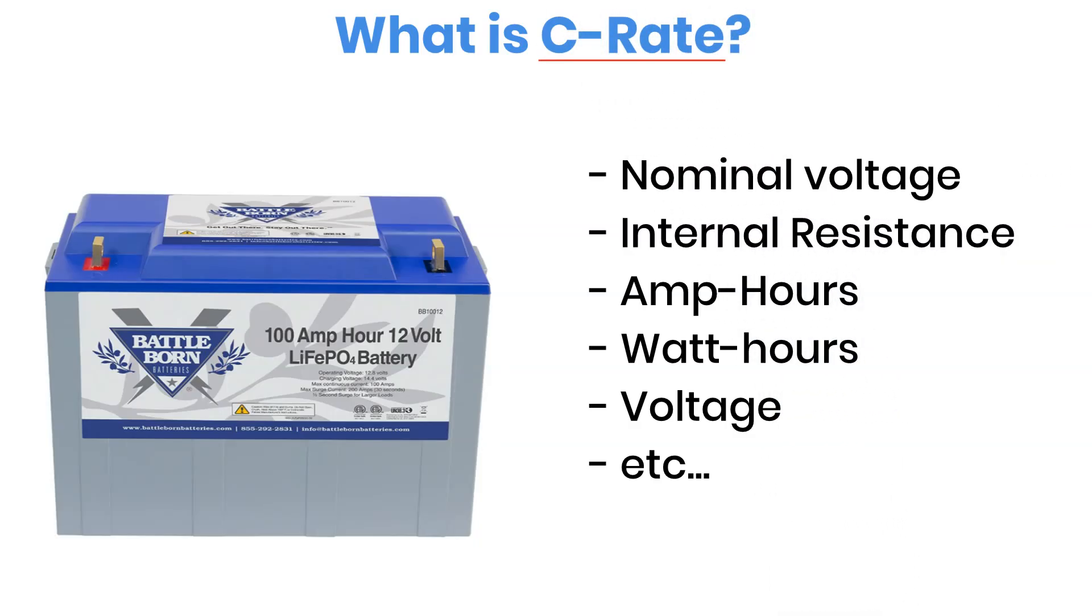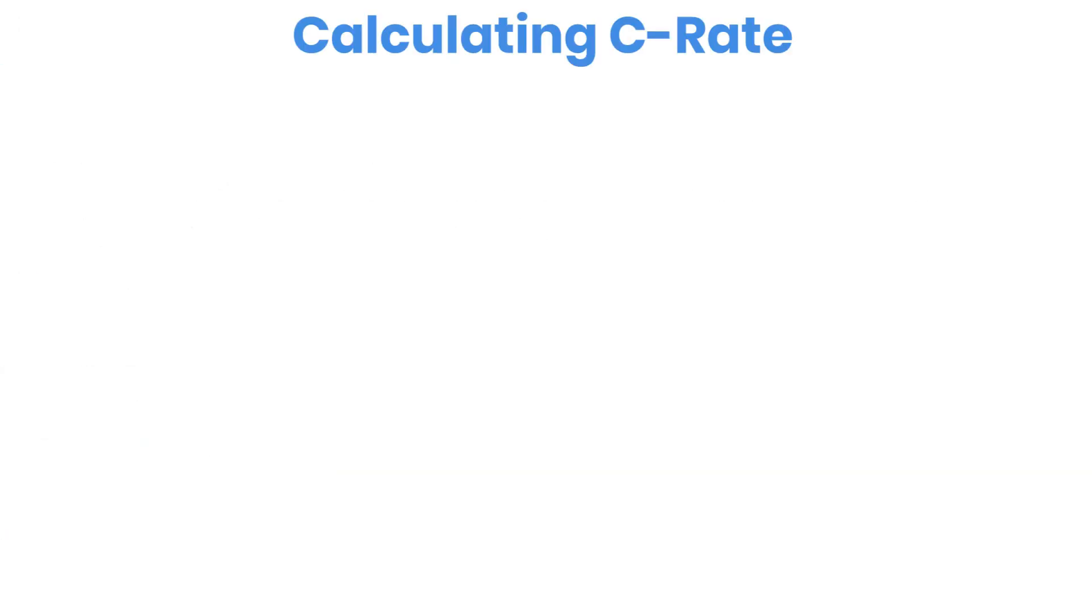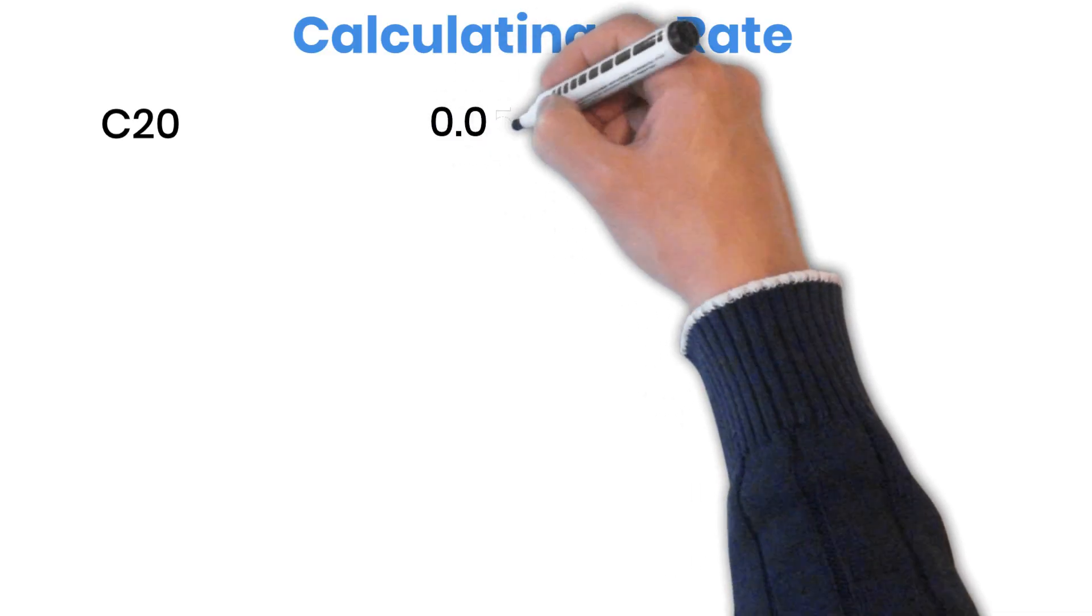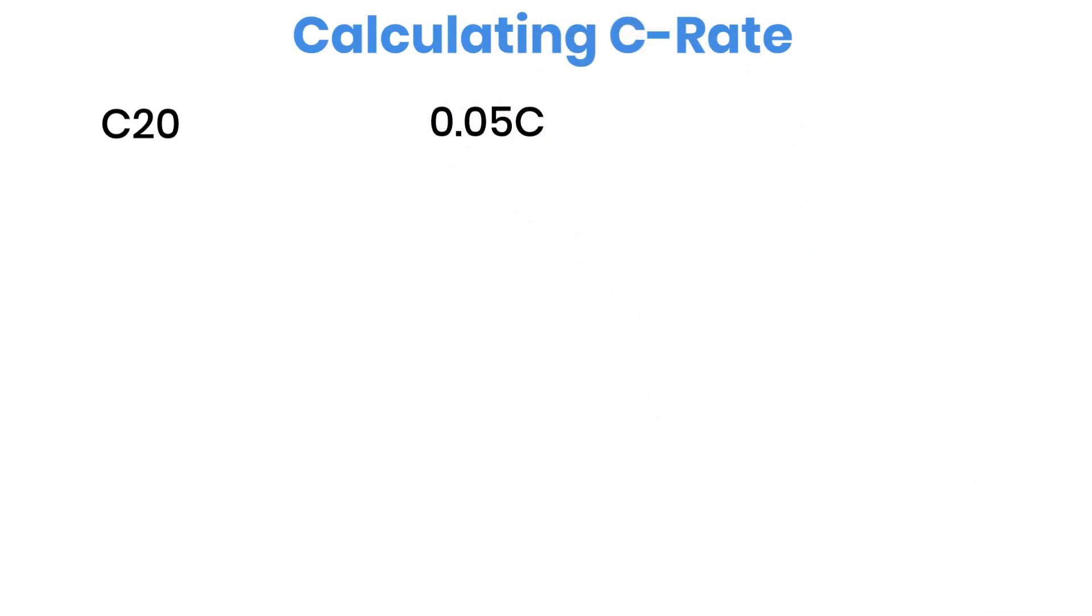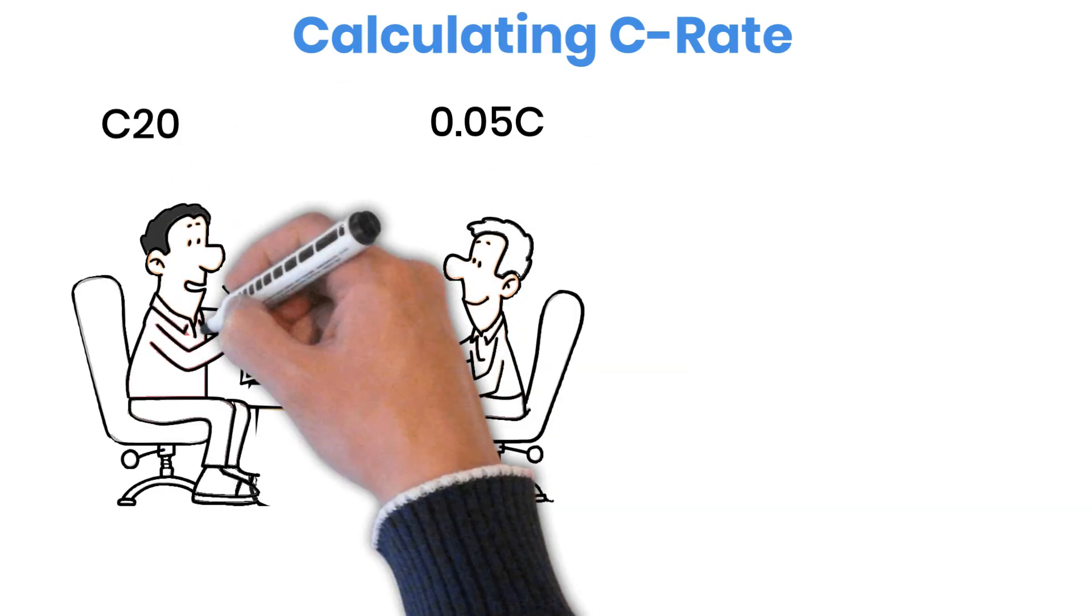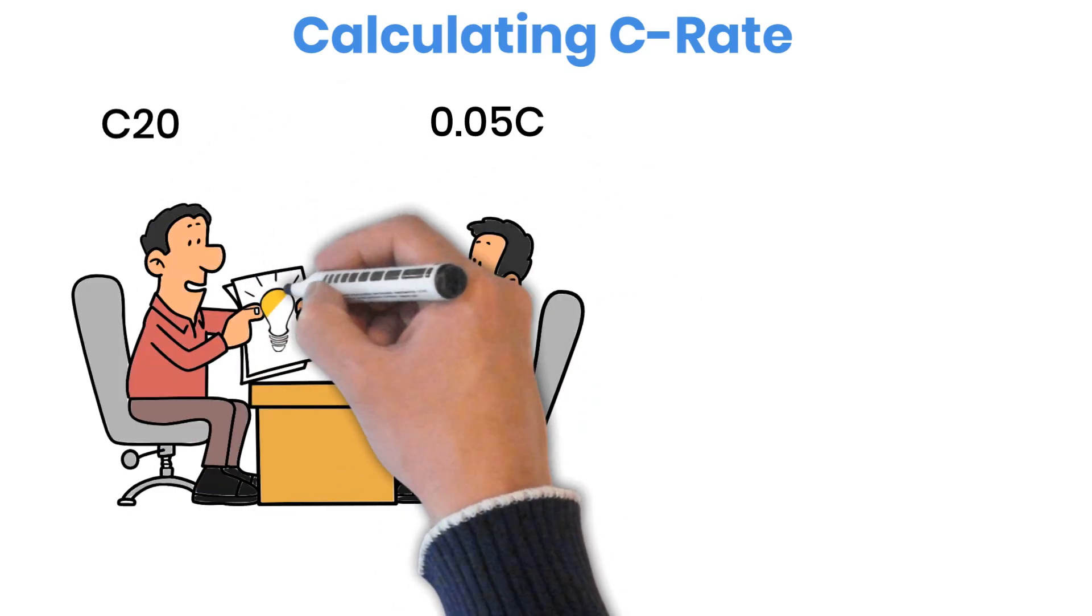C-rate basically tells you how quickly a battery can be charged or discharged. You'll usually see it written in two different styles: the letter C followed by a number, like C20, or a number followed by C, such as 0.05C. Both formats mean the same thing, but the way they're written often confuses people. We'll clear that up step by step.